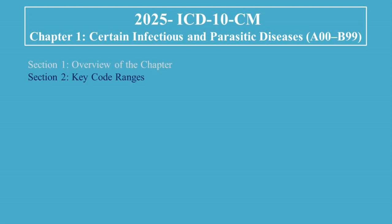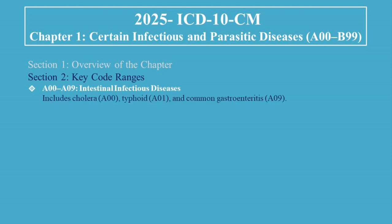Section 2: Key Code Ranges. Here's a quick breakdown of major code categories in Chapter 1. A00 to A09 covers Intestinal Infectious Diseases, including Cholera (A00), Typhoid (A01), and Common Gastroenteritis (A09). For example, a patient with viral gastroenteritis may be coded as A08.4.